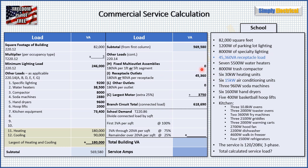Continuing with other loads from 220.14: fixed multi-outlet assemblies — we don't have any, so zero. Receptacle outlets come to 45,360 VA. Other outlets — none. Now we find our largest motor: looking through the whole building, it's one of our cooling units at 15 kW. Twenty-five percent of that is 3,750 VA. Adding our subtotal plus receptacle outlets plus the 25% largest motor premium, we get a total branch circuit load — our connected load — of 618,690 VA.